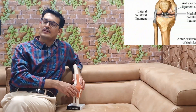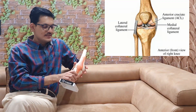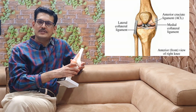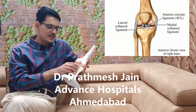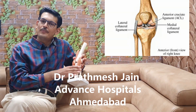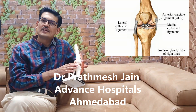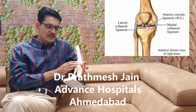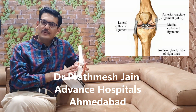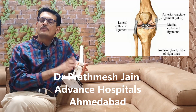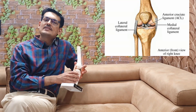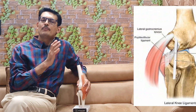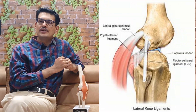The Lateral Collateral Ligament is a very important ligament in your knee. The knee has 4 important ligaments: the anterior cruciate ligament in the front, the posterior cruciate ligament at the back, the medial collateral ligament on the inside, and the lateral collateral ligament on the outside. This lateral collateral ligament, along with 2 other important structures — the popliteus muscle and popliteofibular ligament — makes up the posterolateral complex, which gives stability to the knee.